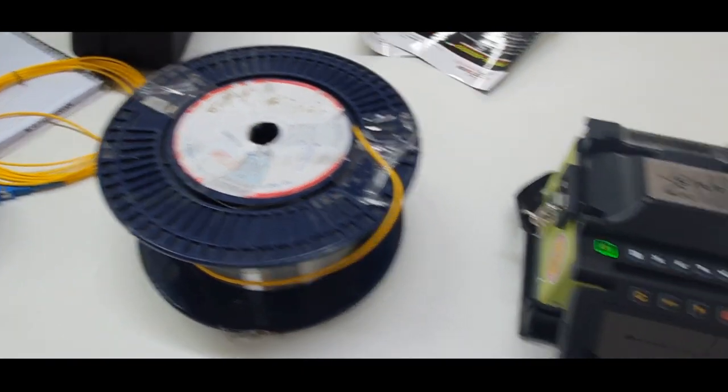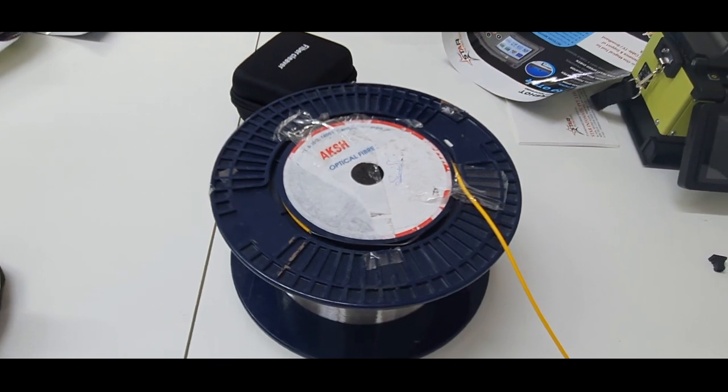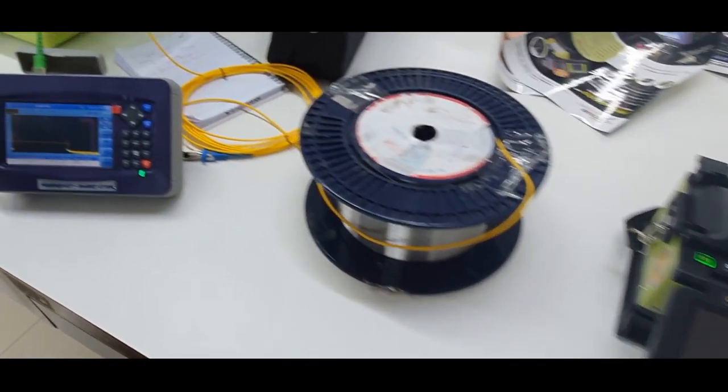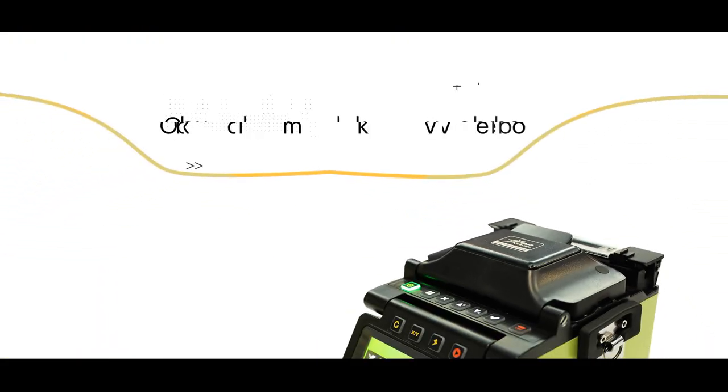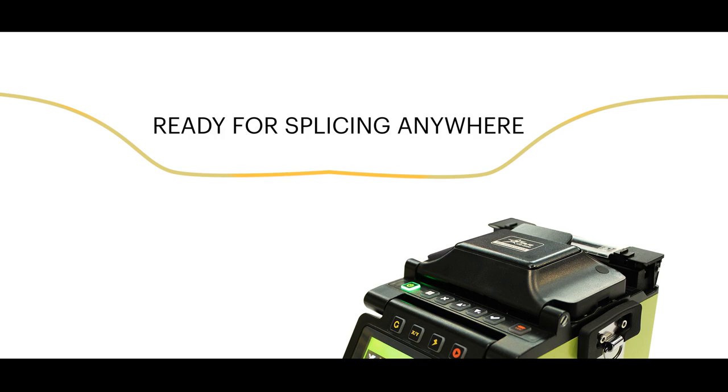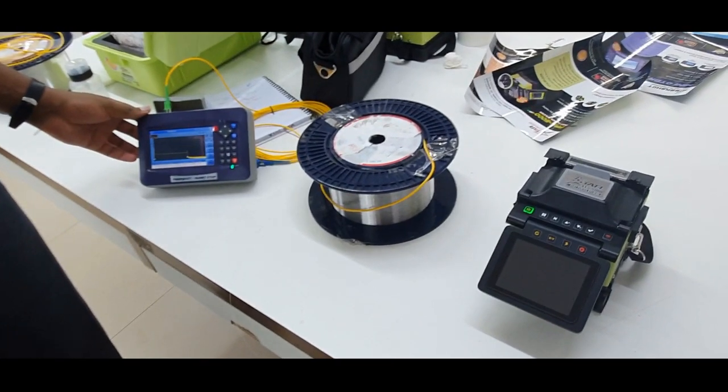We have two spools. We are going to splice two spools, one of two kilometers and the other one of 32 kilometers. Then we are going to take an OTDR test so that we can check the results.